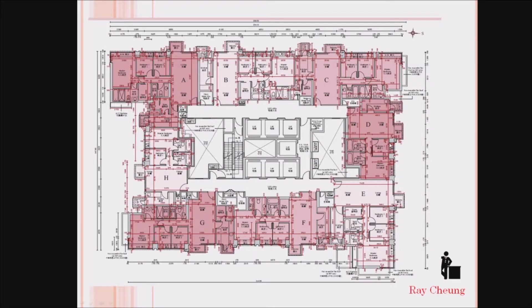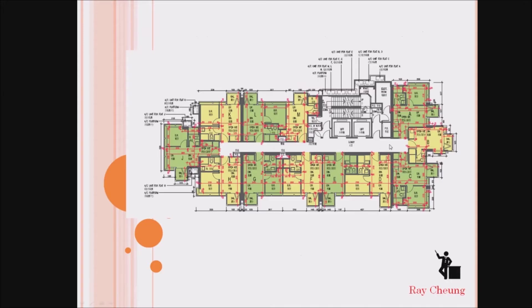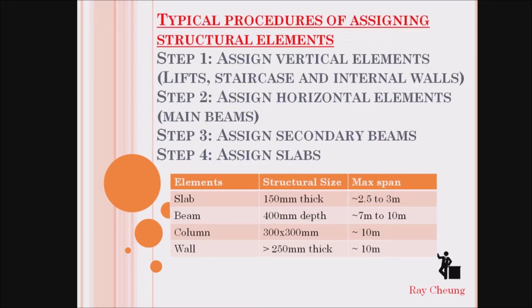This is another type of sample for your reference. I will show you how to do the framing plans if you receive some architectural plans like this. First of all, you need to assign the vertical elements, and then the horizontal elements such as main beams, secondary beams, and the slab.